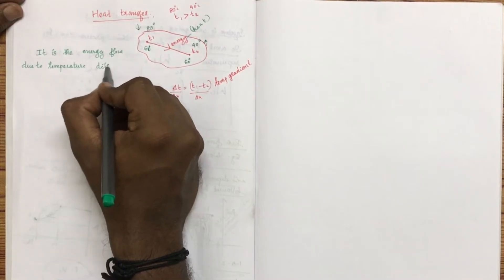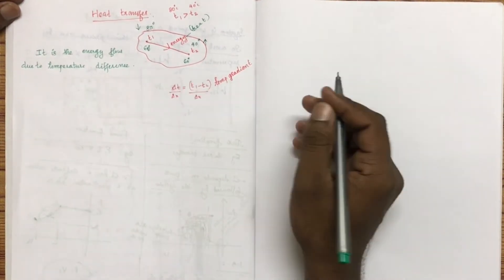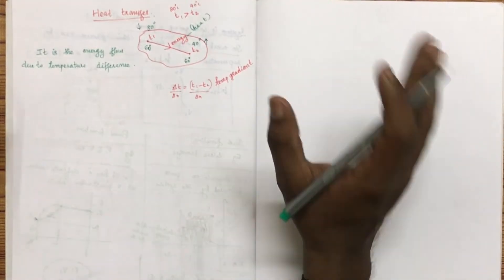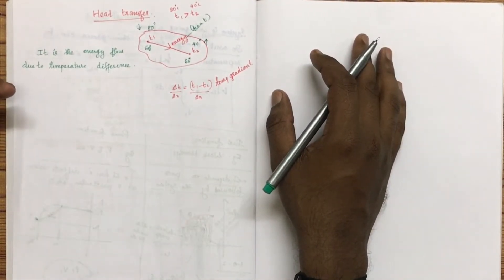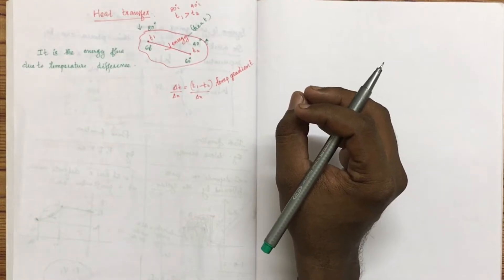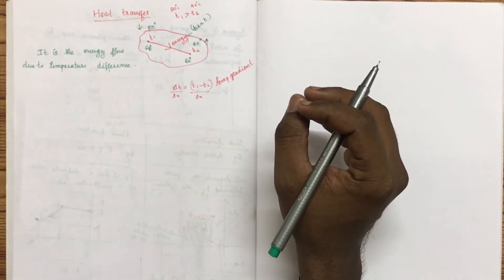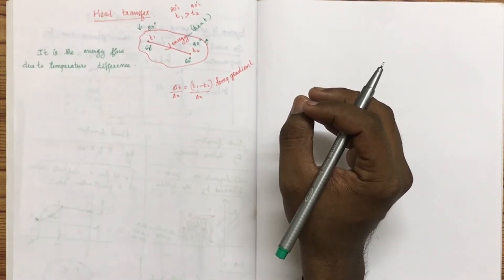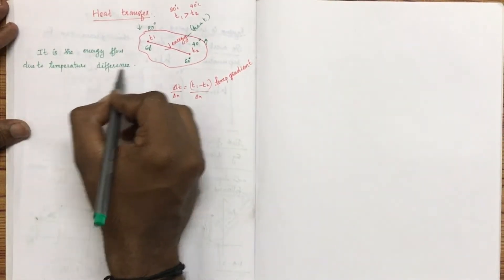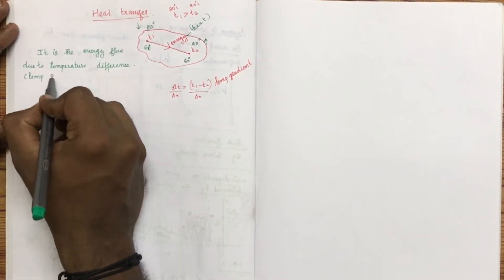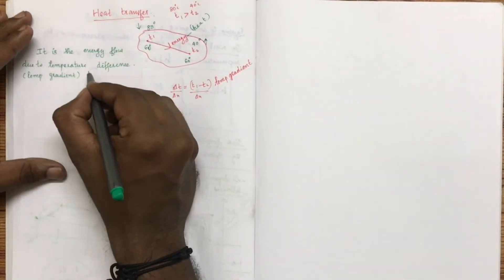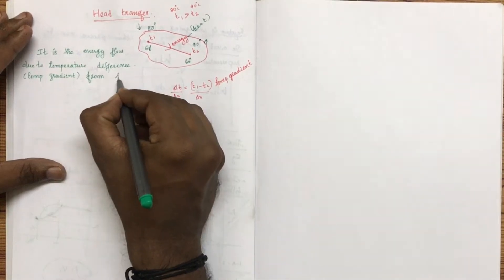The energy flow due to the temperature difference is known as heat. Heat is transferred due to the temperature difference. A certain quantity of energy will flow from the high-temperature region to the low-temperature region. This temperature difference is called the temperature gradient.